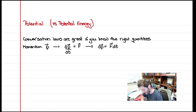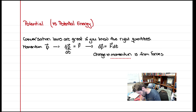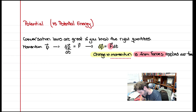What does this say? A change in momentum is from forces being applied over time. If I think of how that sentence translates to the math: changes in momentum is dp, the forces is F, and applied over time is dt. Momentum changes because the force is applied over time.